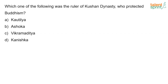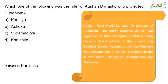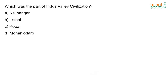Which one of the following was the ruler of the Kushana dynasty who protected Buddhism? The answer is Kanishka. Kanishka is the ruler of the Kushana dynasty who protected Buddhism. The Fourth Buddhist Council was organized in Kashmir during his reign. The president of this council was Buddhist scholar Vasumitra and vice president was Ashvaghosha. After this, Buddhism divided into two sects: Hinayana and Mahayana.